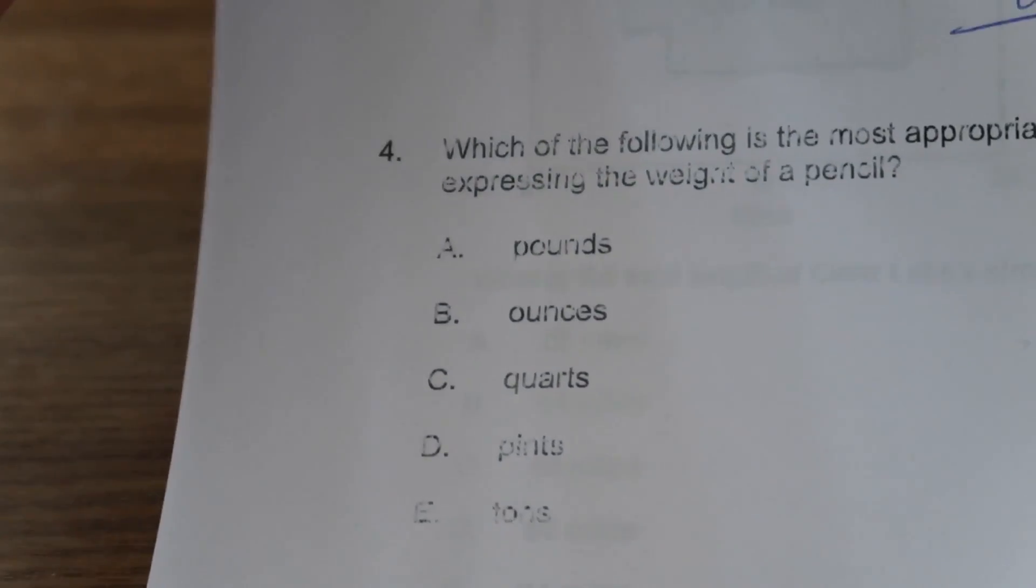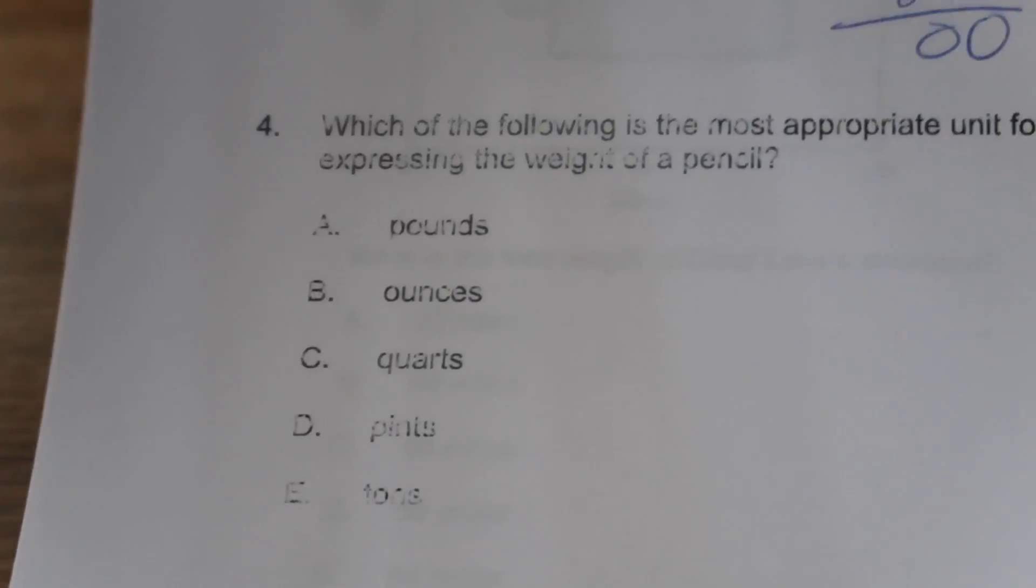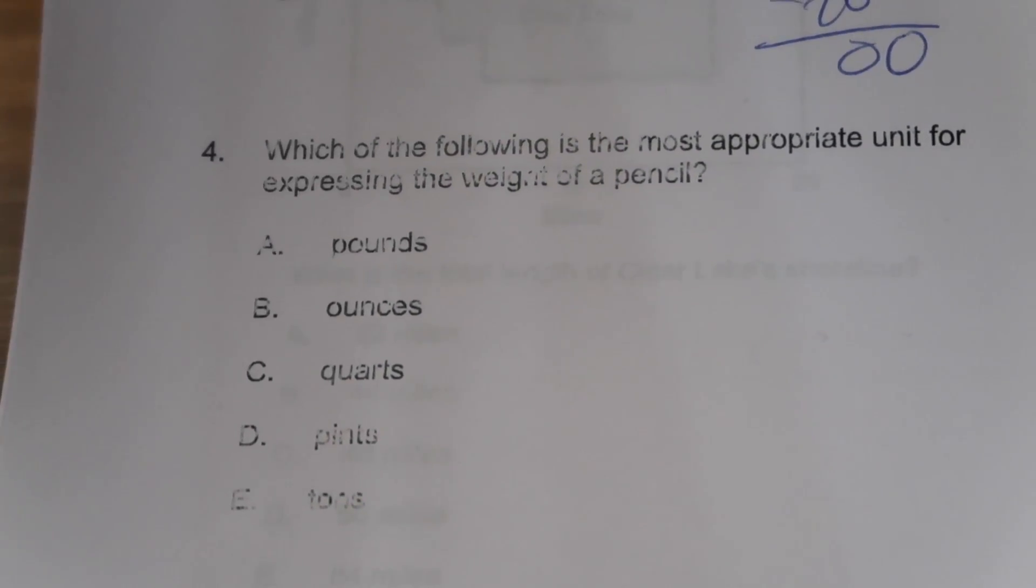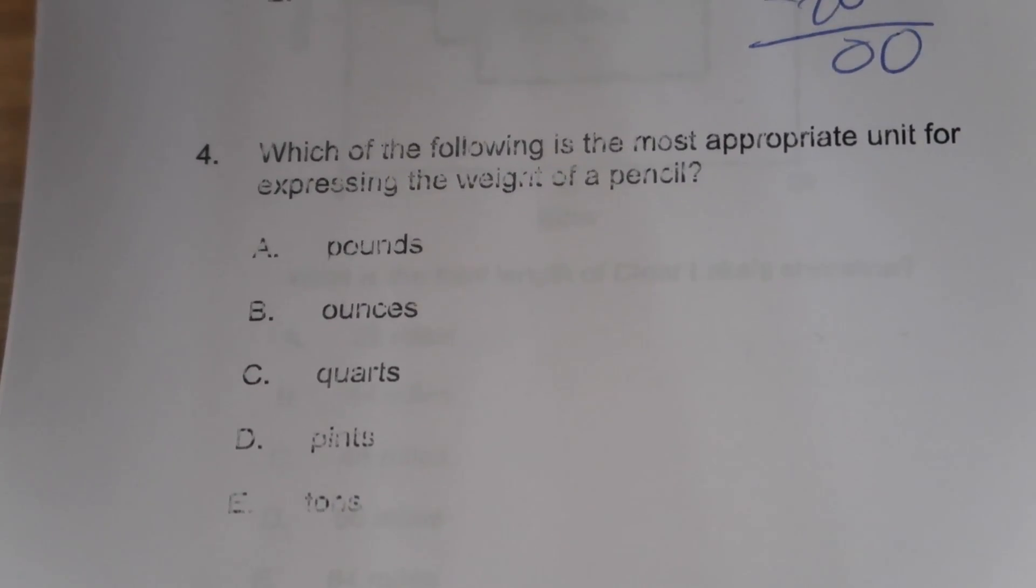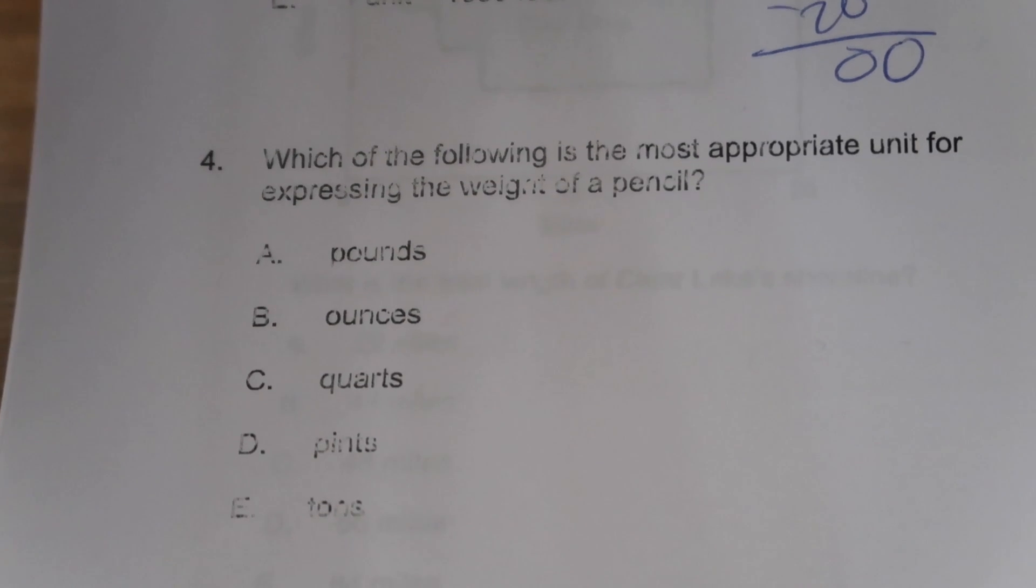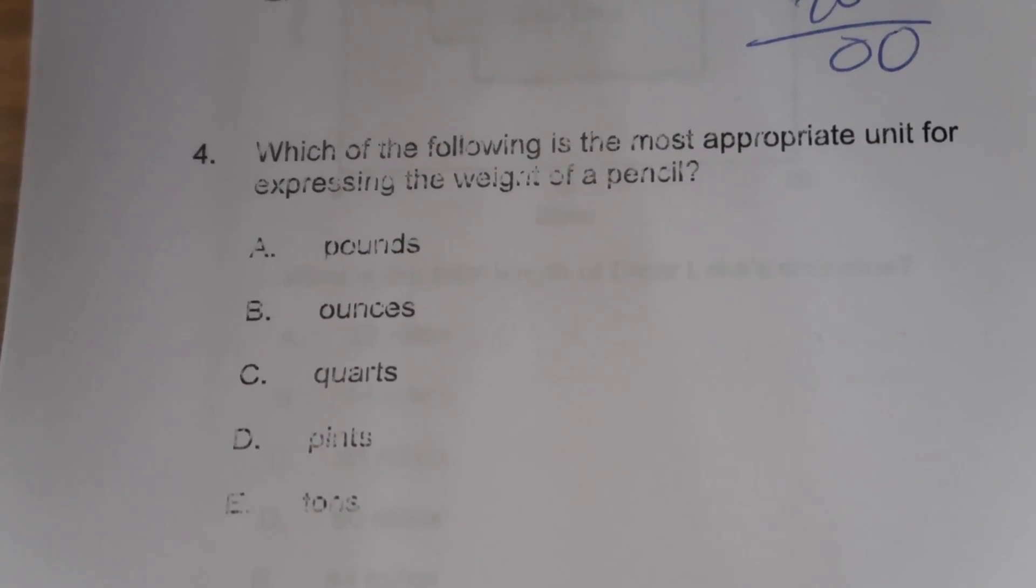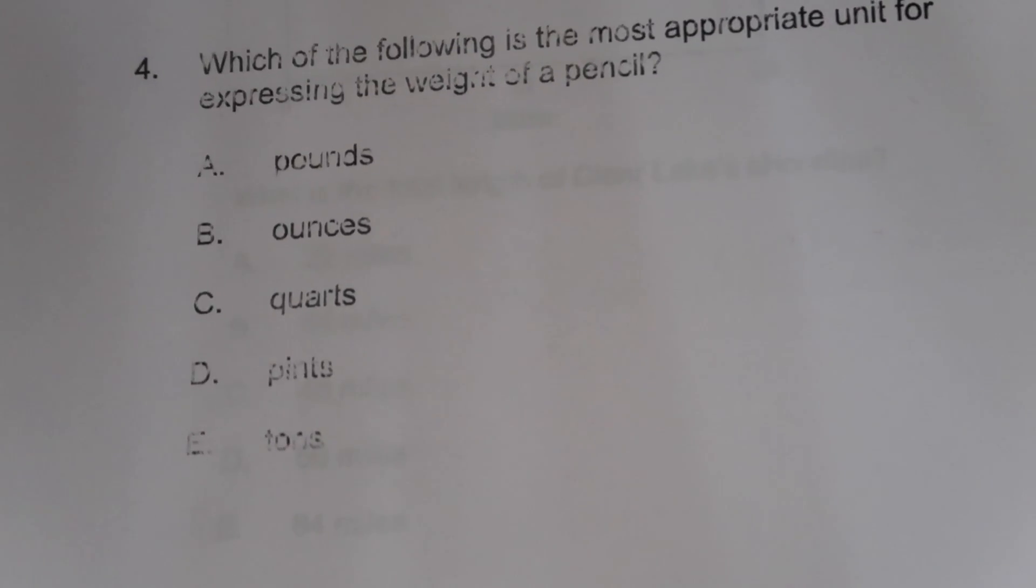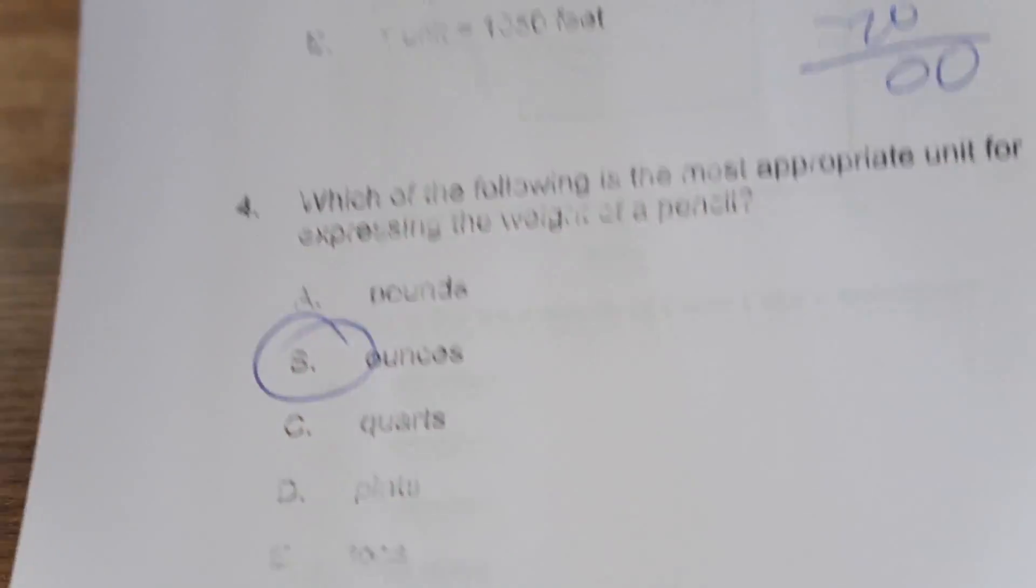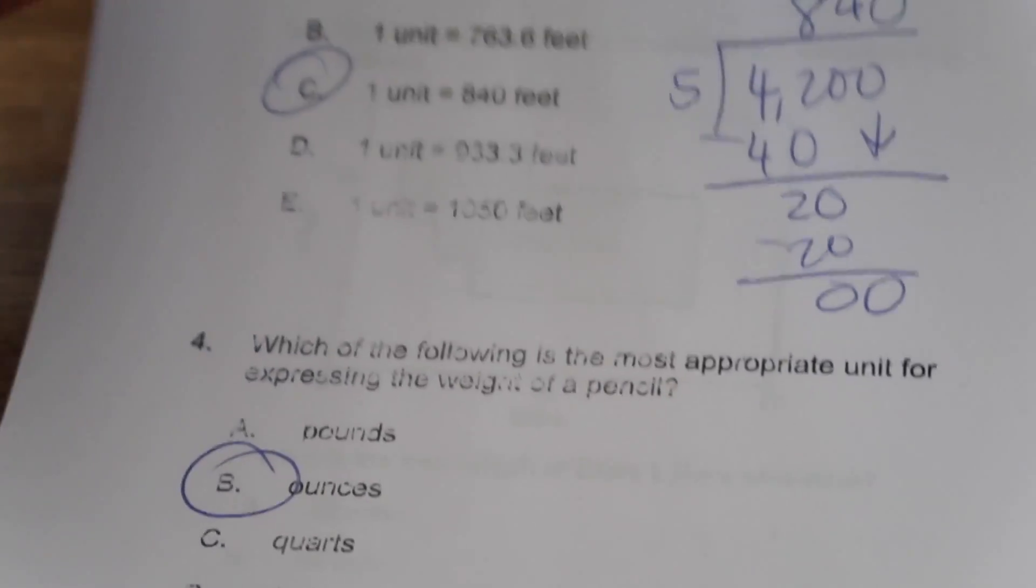Which of the following is the most appropriate unit for expressing the weight of a pencil? Pounds could be, although one pound is quite heavy for a pencil. Ounces is smaller than pounds, so that's a possibility. Quarts and pints are used mostly for liquids, and tons are things like cars. So I'm going to go with ounces, and it says B.